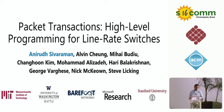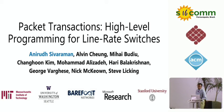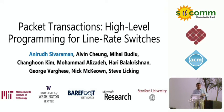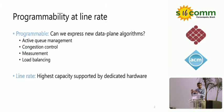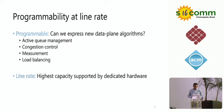What do I mean by programming a line rate switch? When I say programmable, I mean the ability to express a new data plane algorithm — any algorithm that modifies packet fields and/or persistent switch state in the data plane as packets go through the switch. And we want to do this at line rate, which I'm defining as the highest capacity supported by dedicated hardware switches at any given point in time — today that's 10 to 100 gigabits per second on 10 to 100 ports.